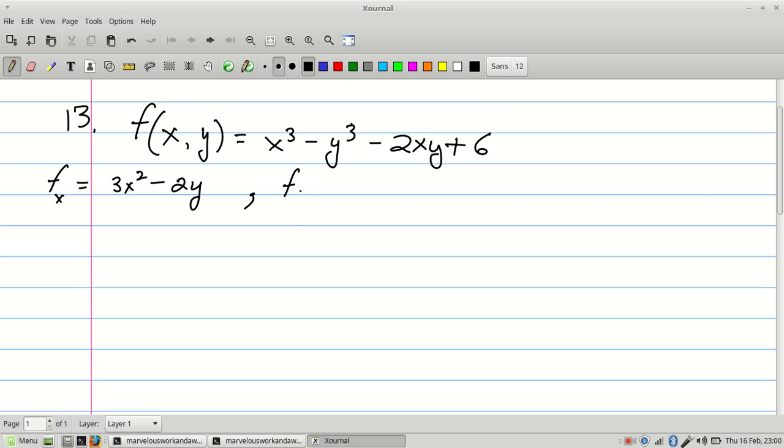And f's partial derivative with respect to y would be negative 3y squared minus 2x. Now with critical points, you've got to set these to 0. So it's going to be 3x squared minus 2y equals 0, and negative 3y squared minus 2x equals 0.